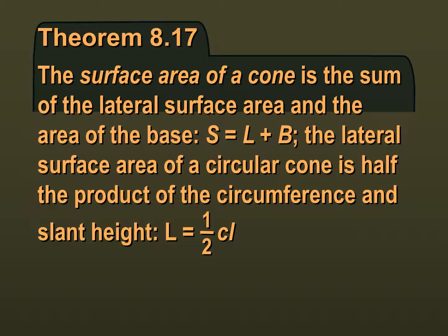Now let's take a look at the surface area of a cone. The formula for the total surface area of a cone is lateral surface area plus base, just like a pyramid. However, we're dealing with a circle, which has circumference instead of perimeter. So the lateral surface area is one half circumference times slant height. Since circumference is 2πr, one half of 2 is just 1, meaning our lateral surface area is simply π times r times l, our slant height.